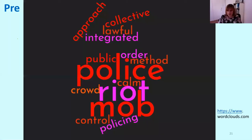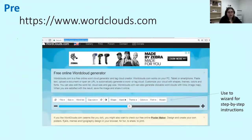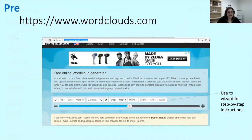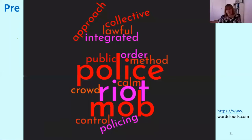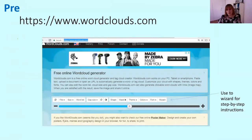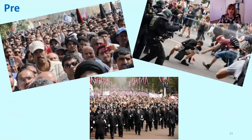One strategy is using a word cloud — a website where you type in key vocabulary from the text and it organizes it into a graphic. Words typed more times appear bigger. You tap the words into the wizard and it gives step-by-step instructions. Another way to activate prior knowledge is using pictures, which might generate discussion. Hopefully while discussing, students are bringing up key language and getting their minds into the subject area.